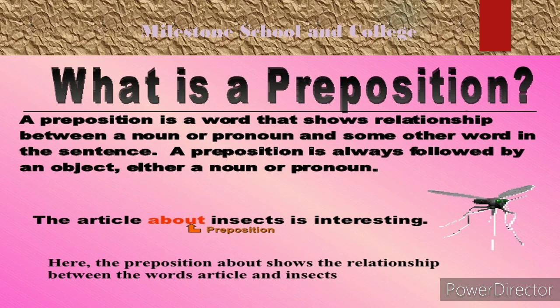A preposition is always followed by an object, either a noun or pronoun. For example: 'The article about insects is interesting.' Here, 'about' is the preposition, and 'insect' is the object. So preposition is always followed by an object. The preposition 'about' shows the relationship between the words 'article' and 'insect.' With this example, we can easily understand that a preposition always builds a relationship between the noun or pronoun, and it is followed by an object. An object may be a noun or pronoun.